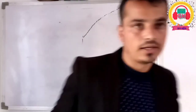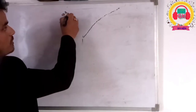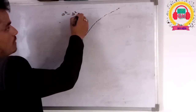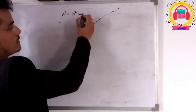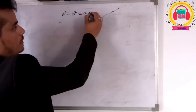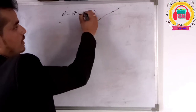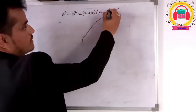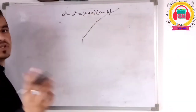We are going to talk about a square minus b square. This equals a plus b times a minus b.